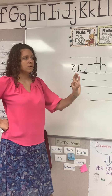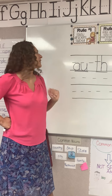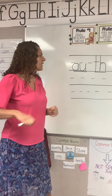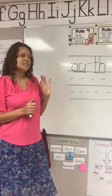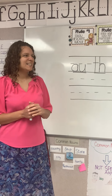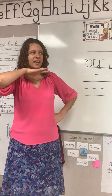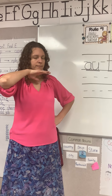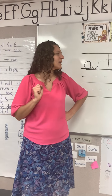What sounds do we hear in the word 'aunt'? Aunt. Good — 'au', 'nn', 'tt'. And we're going to use 'au' that we do not use at the end of English words. Which are we going to use? Good. Write 'aunt' and say the sounds while you write them.